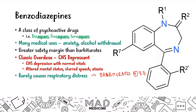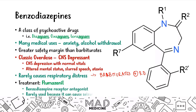When it comes to benzo overdose, there is an antidote: flumazenil, which is a benzodiazepine receptor antagonist. It's rarely used in real life because it can cause seizures. But for USMLE Step 1, you'll have questions where a patient presents with benzo toxicity — altered mental status, slurred speech, no respiratory distress — and the answer for treatment is flumazenil.